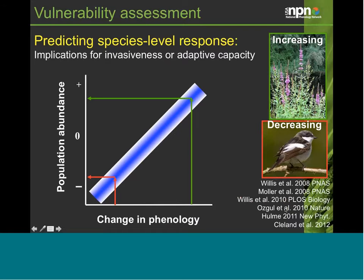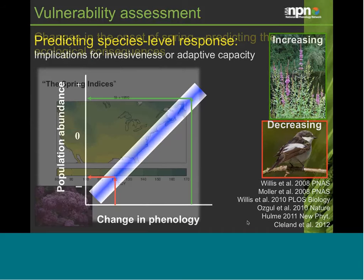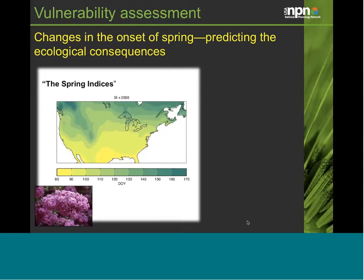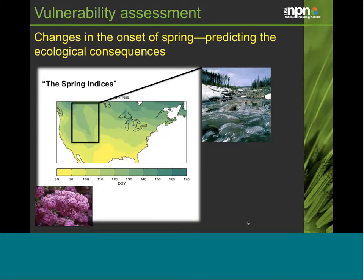We can also use phenological information to document and predict ecological consequences of change. At continental levels, we might use models to predict the onset of spring, such as spring indices — meteorological models validated by leafing and blooming of indicator species. More locally and regionally, we can build on the correlation of peak streamflow from snowmelt with the onset of spring to forecast streamflow. These models can also inform phenological models related to bark beetle outbreak and wildfire in the west.